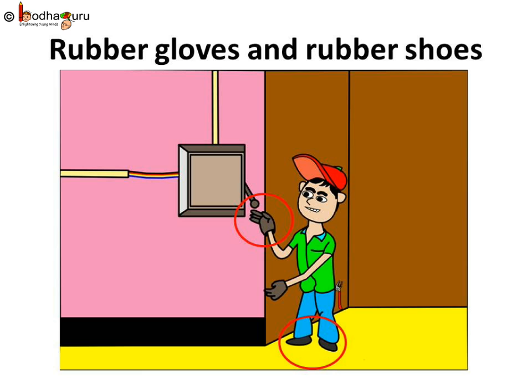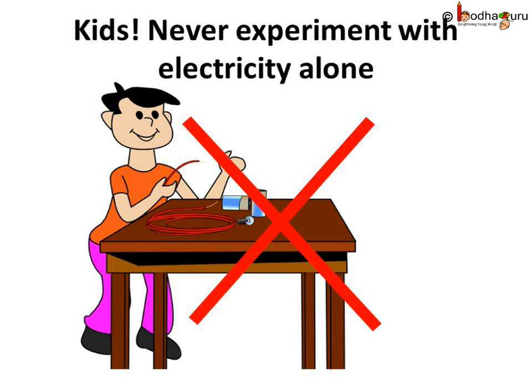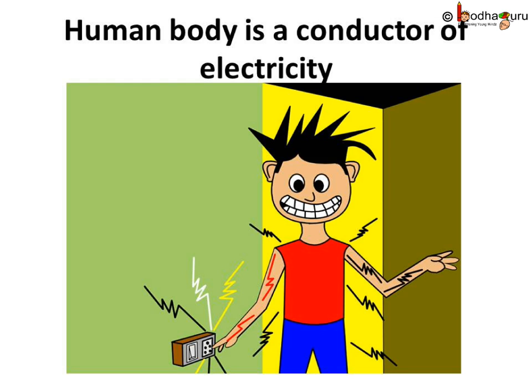That is any rubber footwear while dealing with electricity. And most importantly, kids should never try to experiment with electricity alone as it is dangerous. Whenever required, it should be done under adult supervision for safety. You must be thinking, why so many precautions are necessary? This is because our body is a conductor of electricity. Electricity can pass through our body and give us a shock, which is dangerous for life. Therefore, we should be careful when we handle any electric appliance.